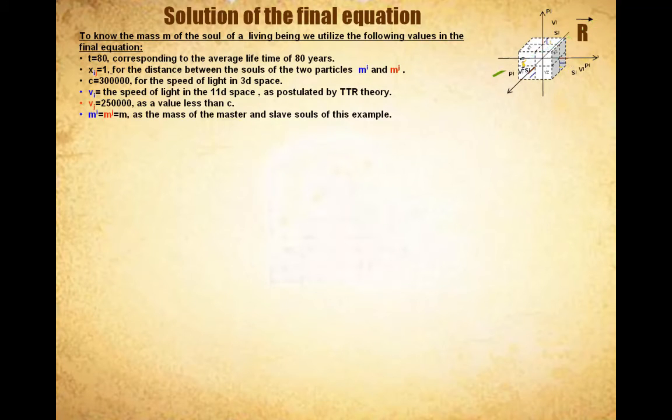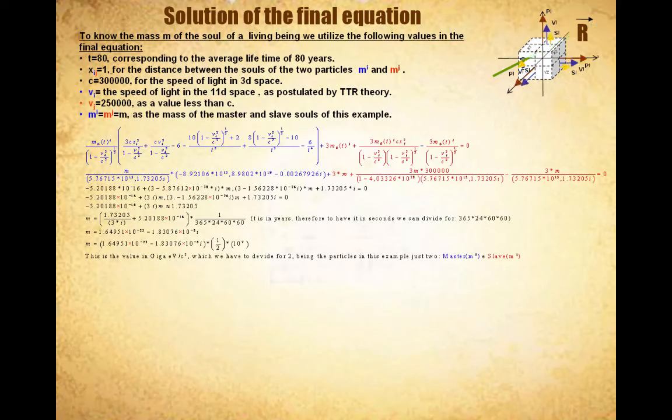T equals 80 corresponding to the average lifetime of 80 years, Xij equals 1 for the distance between the souls of the two particles MI and MJ, C equals 300,000 for the speed of light in 3D space, I equals the speed of light in the 11D space as postulated by TTR theory, VJ equals 250,000 as a value less than C, MI equals MJ equals M as the mass of the master and slave souls of this example.